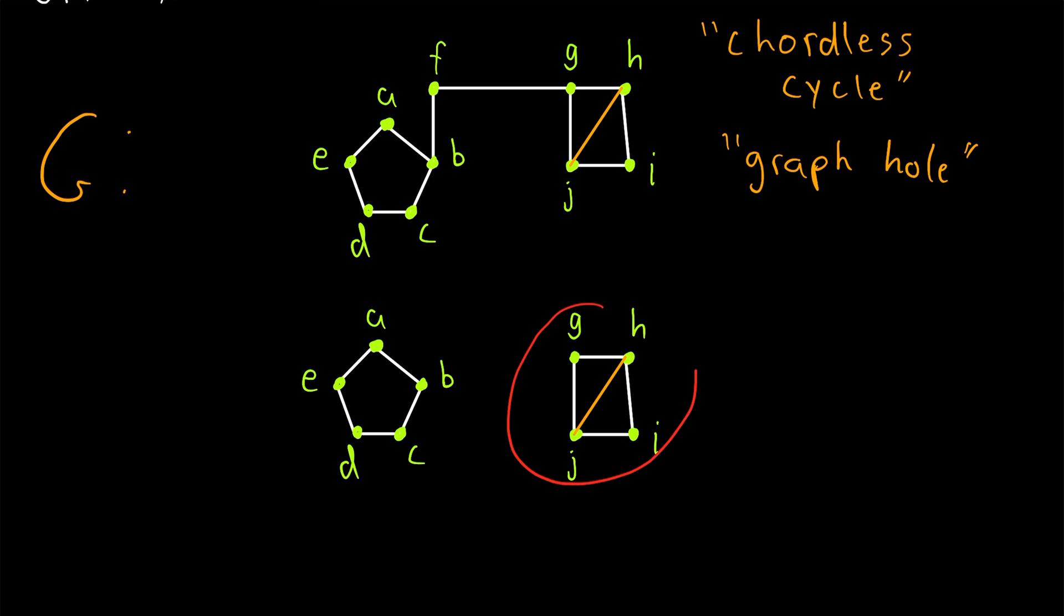Whereas the subgraph that is induced by a cycle that's not chordless, and has at least four vertices, will not be a cycle graph, because it will have those pesky chords in it.